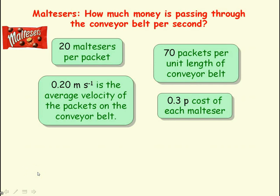Before we look at how we determine the current in a conductor, we're first going to look at an example of a Maltesers production line, where a worker is watching Maltesers pass by on a conveyor belt and trying to work out how much money is passing by per second. He has four pieces of information: each packet contains 20 Maltesers; the average velocity of the conveyor belt is 0.20 metres per second; for one metre of conveyor belt there are 70 Malteser packets; and each Malteser is worth 0.3 pence.